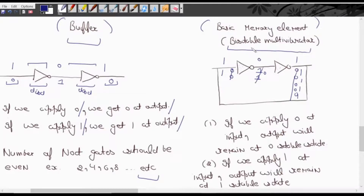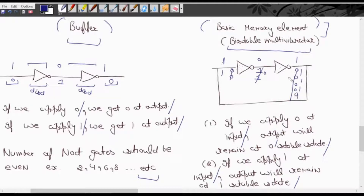If we apply 0 at input, the output will remain at the 0 stable state. In the same way, if we apply 1 at input, the output will remain at the 1 stable state. It is also known as a basic memory element — because when I initially apply 1, the output always maintains 1, meaning the 1 is stored. Similarly if I apply 0, that 0 is maintained due to feedback — so it is called a basic memory element.